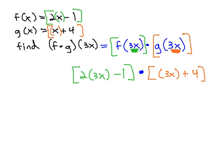Let's do a little simplifying to clean it up. 2 times 3x is 6x - 1, being multiplied by 3x + 4.